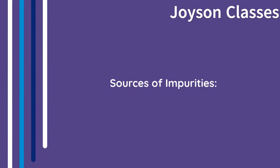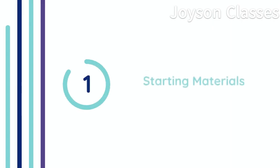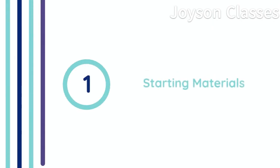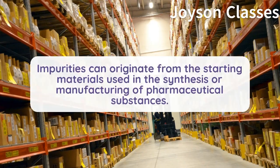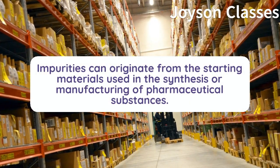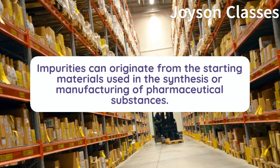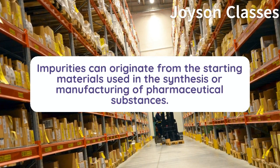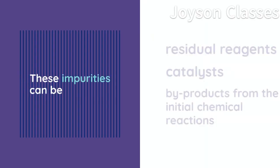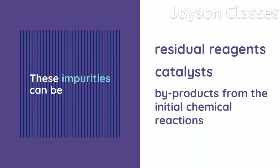Sources of Impurities. 1. Starting Materials: Impurities can originate from the starting materials used in the synthesis or manufacturing of pharmaceutical substances. These impurities can be residual reagents, catalysts, or byproducts from the initial chemical reactions.